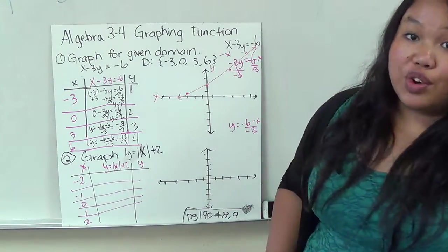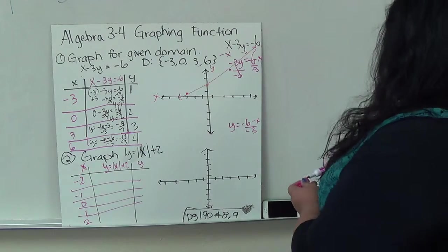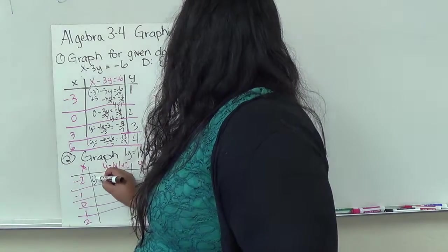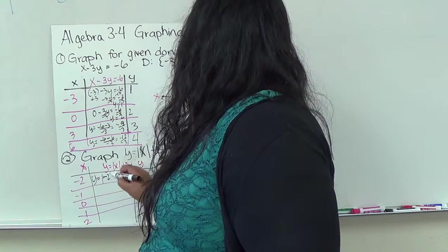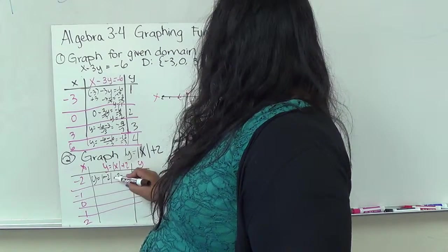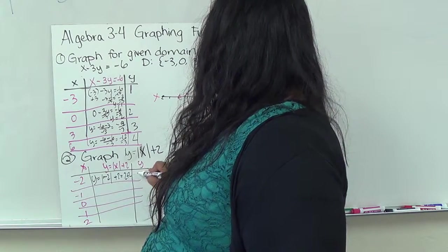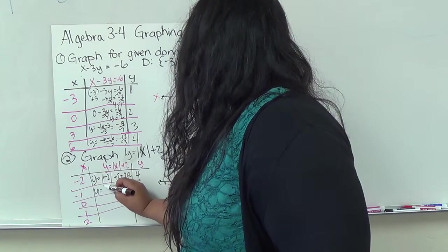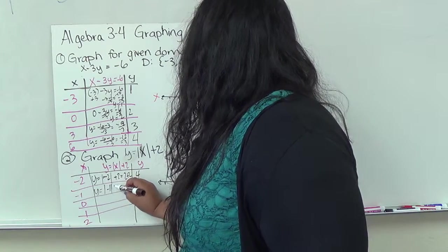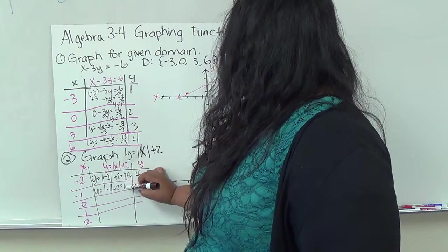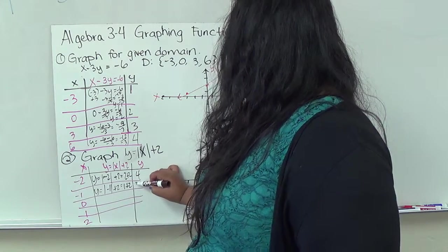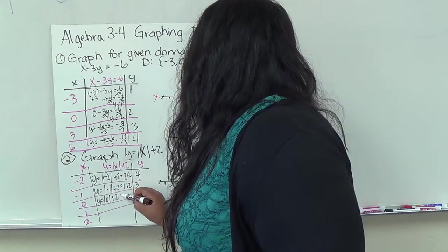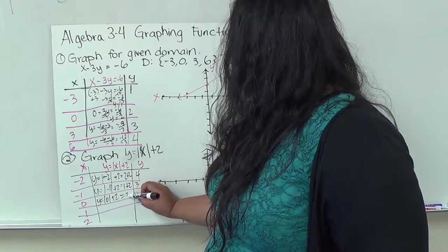Which is super crooked. So I apologize for that. Alright, so I'm going to plug it in. Y equals the absolute value of negative 2 plus 2. And the absolute value of negative 2 is positive 2. So it's 2 plus 2, which gives me 4. This one is y equals the absolute value of negative 1 plus 2. And the absolute value of negative 1 is positive 1 plus 2, which gives me 3. Y equals the absolute value of 0 plus 2. And the absolute value of 0 is 0. So 0 plus 2 is 2.